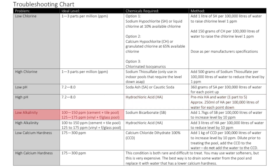For low alkalinity — the ideal level of alkalinity is 100 to 150 parts per million — the chemical we're going to add is sodium bicarbonate. Add 1.7 kilos of sodium bicarbonate per 100,000 litres of water to increase the level by 10 parts per million.